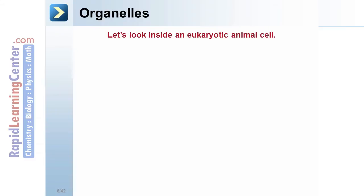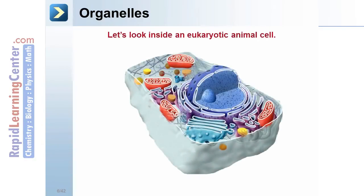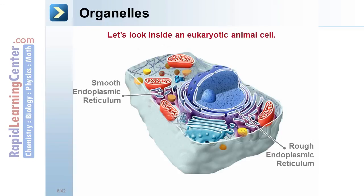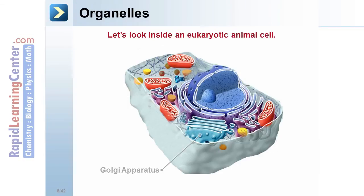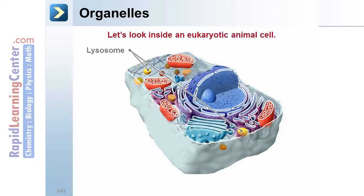Let's look inside a eukaryotic animal cell. This is a schematic of a typical eukaryotic animal cell. This is the nucleus. Ribosomes. Smooth endoplasmic reticulum and the rough endoplasmic reticulum. Notice that in the rough endoplasmic reticulum ribosomes are attached to it, giving it the dotted or rough appearance. Golgi apparatus. Mitochondria. Lysosome. Plasma membrane.